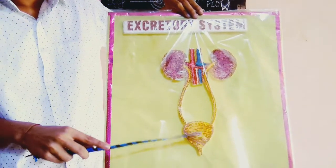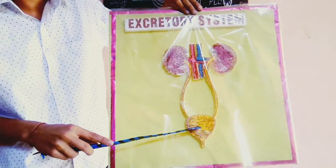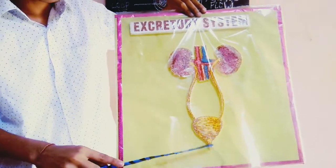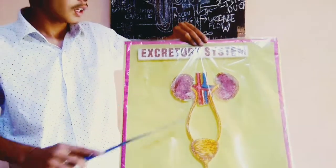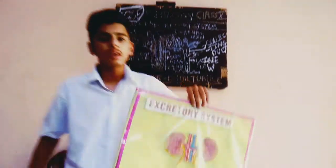This is the urinary bladder from outside. This was the working of the excretory system.